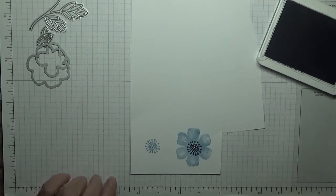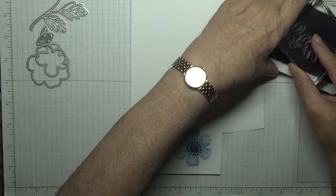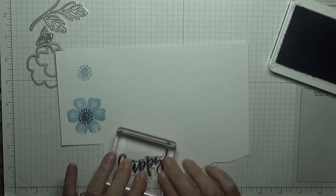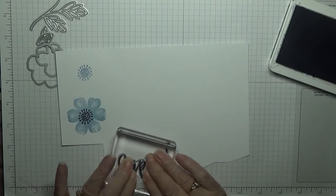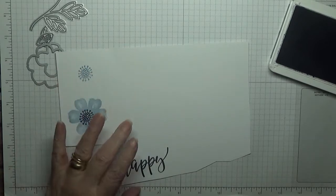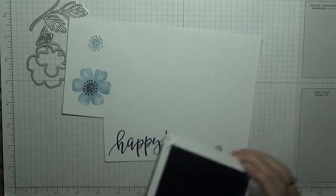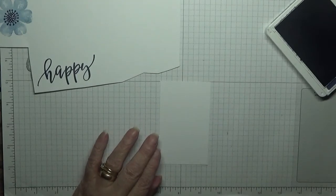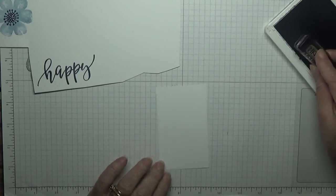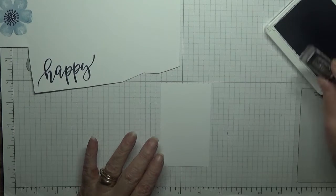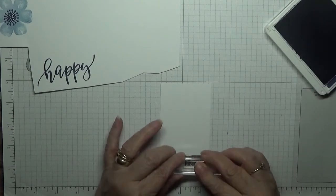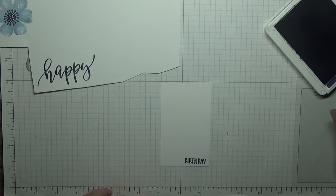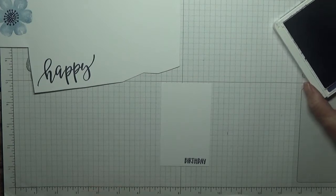And then we get our Happy bit and we just stamp that there, like that. Keep that out because we need that. We need to bring our rectangle bit in and with the word Birthday we're going to stamp that at the bottom here, like that. I think that's our stamping done.